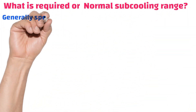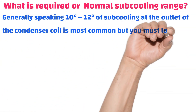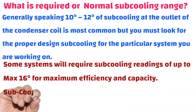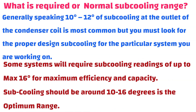The normal sub-cooling range: generally, 10 to 12 degrees of sub-cooling at the outlet of the condenser coil is most common, but you must look for the proper design sub-cooling for the particular system you are working on. Some systems will require sub-cooling readings of up to 16 degrees for maximum efficiency and capacity. Sub-cooling should be around 10 to 16 degrees as the optimum range.